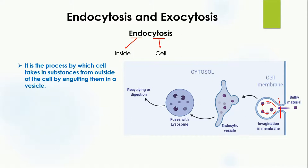After invagination, the cell membrane pinches off and separates, forming a vesicle known as the endocytic vesicle, which contains the bulky material entering the cell. This endocytic vesicle then fuses with the lysosome, which contains enzymes used to digest the bulky material — either for recycling or to break it into smaller particles.